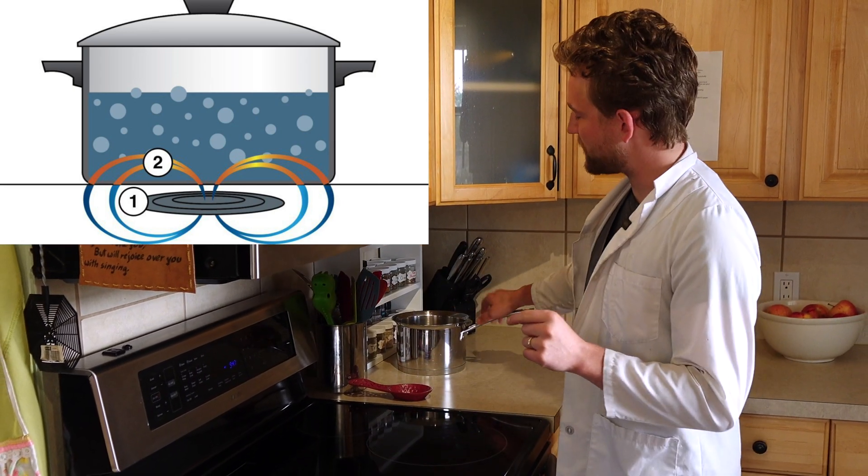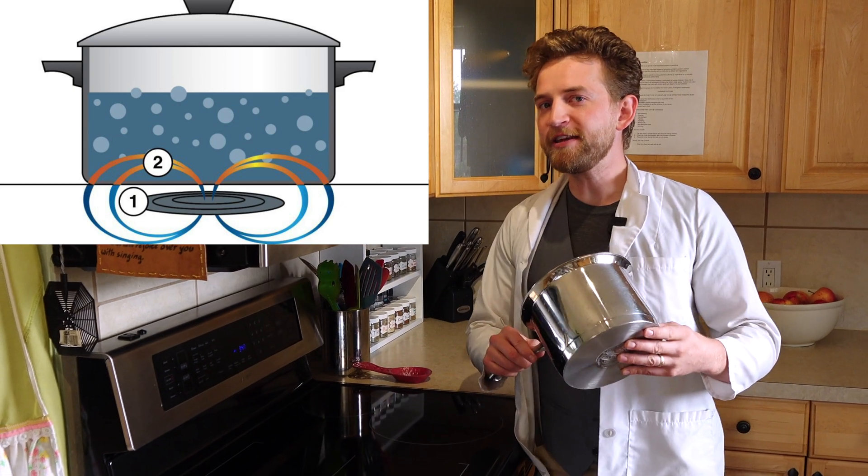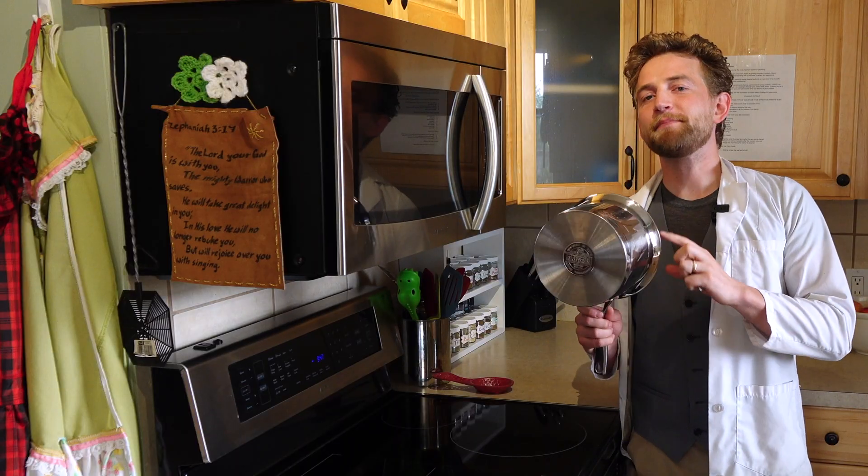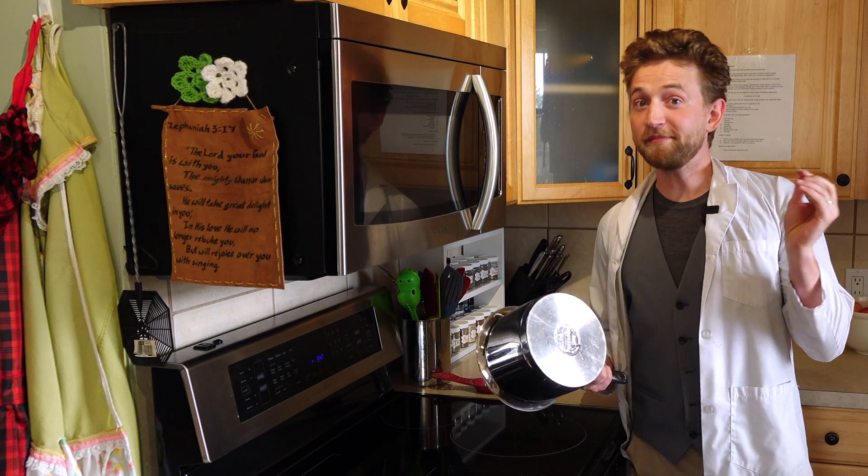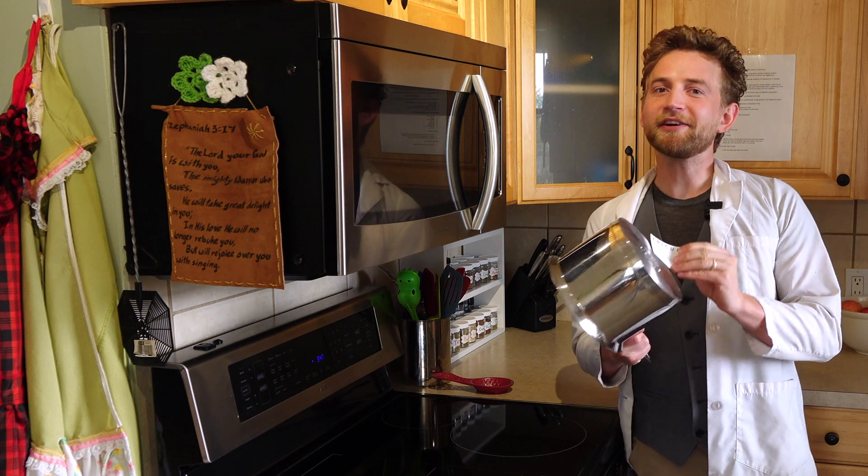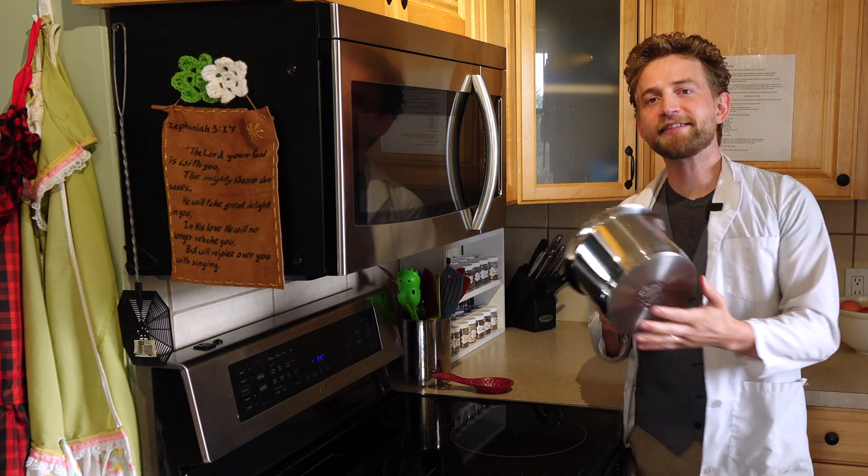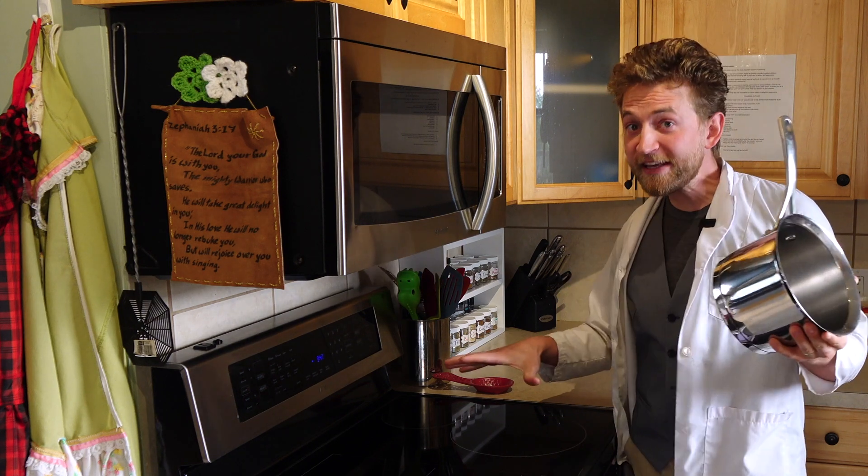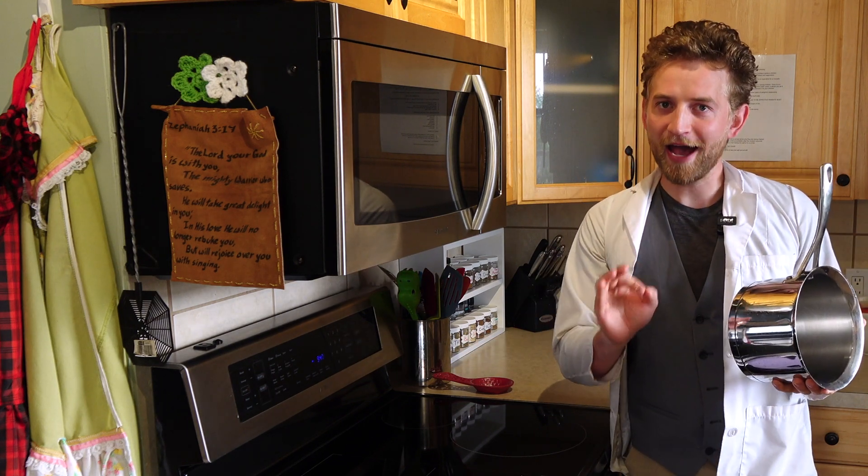But what happens when I bring something into that magnetic field that is magnetic? This is a magnetic pot. You can check it by having a magnet. It sticks. So that means that there is some sort of iron inside of this pot. When I bring a magnetic pot into a magnetic field, something very cool happens.